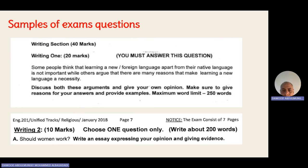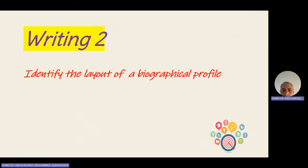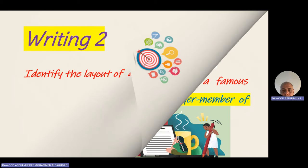The second writing is describing a character — a biographical profile. You can write about an explorer, a scientist, a player, or any person including a family member. You can write about their early childhood, their studies, the problems and challenges they faced, how they overcame those problems, and their achievements or great work that helped people, the community, or the world.